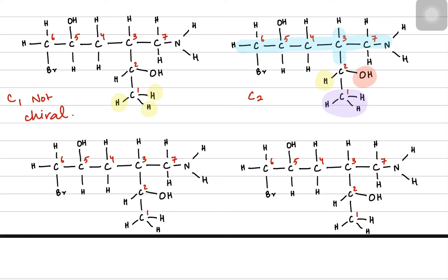The fourth bond is this entire structure — don't just call it carbon; the fourth bond is the entire structure. And they are all different, so carbon 2 is chiral. Now focus on carbon 3. Carbon 3 has a hydrogen on top, and there's this whole big structure at the bottom — the CH with OH and the CH3.